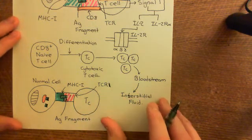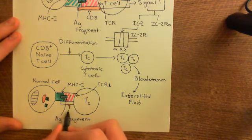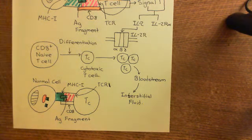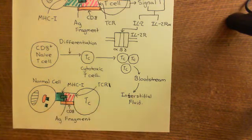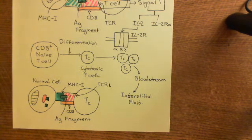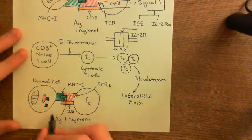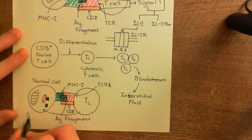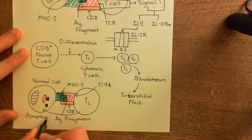The cytotoxic T-cell also has CD8 on its surface, and this will also bind to the MHC class 1. As soon as this happens, the cytotoxic T-cell knows that this cell is infected with the intracellular pathogen it was armed against. What it's going to trigger is apoptosis in this cell — causing this cell that was infected with the intracellular pathogen to commit apoptosis.